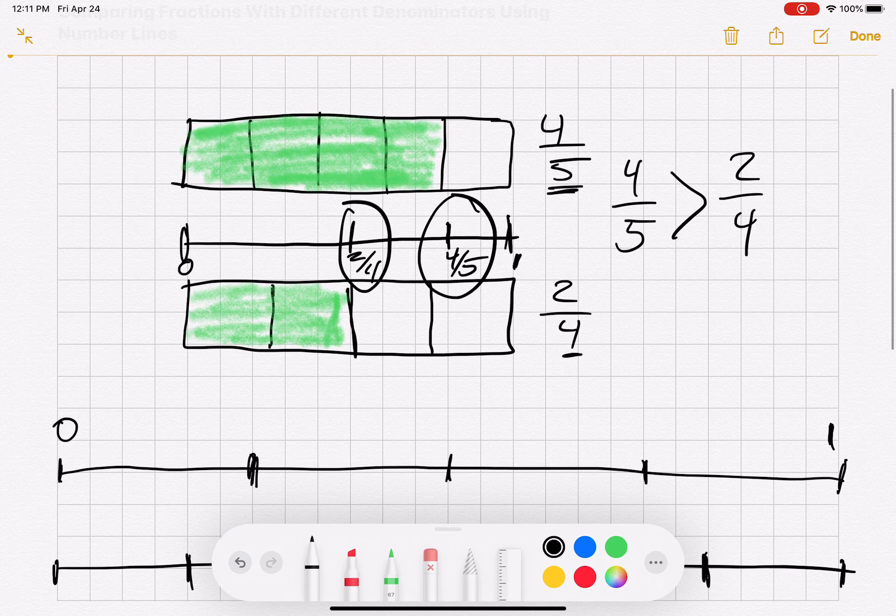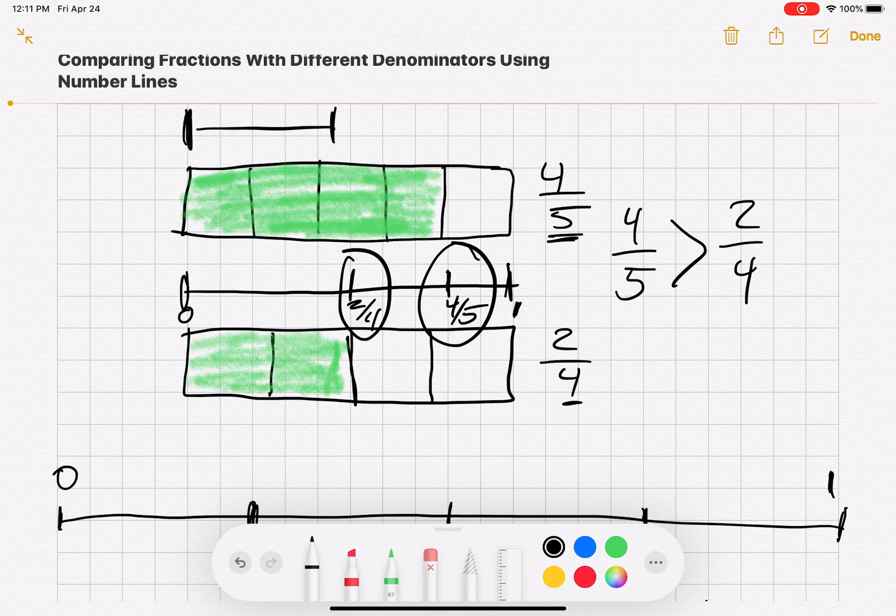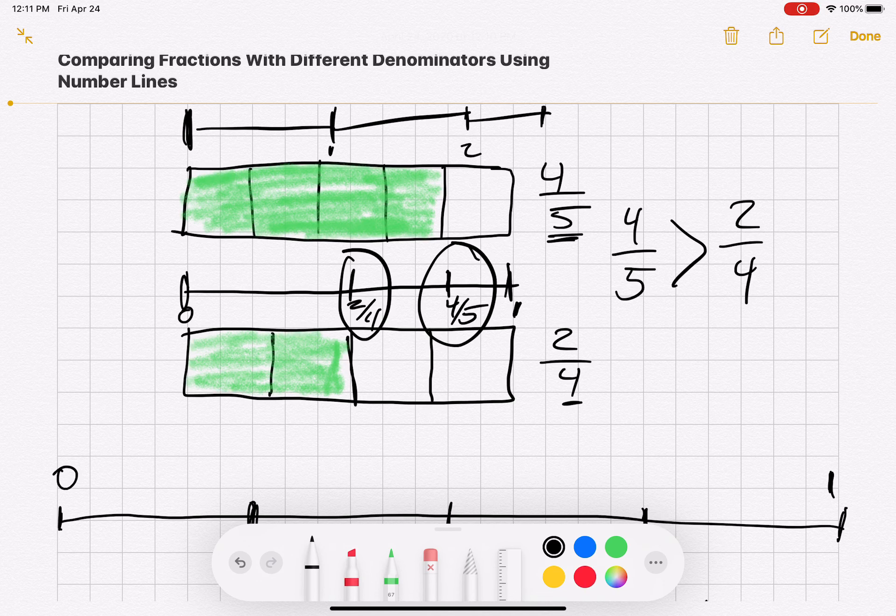It's the same as if we're measuring with a ruler. That would be one centimeter, two centimeters, three centimeters. The further we go to the right, the larger the number.